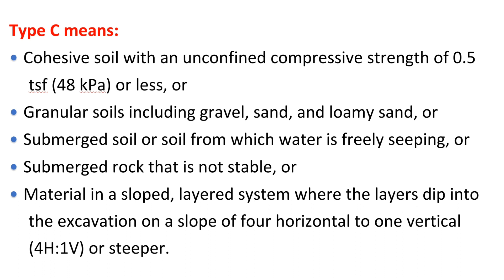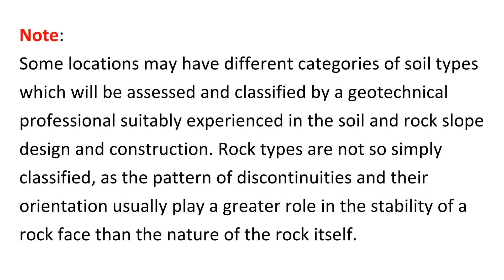Type C means cohesive soil with an unconfined compressive strength of 0.5 TSF (48 kilopascals) or less; or granular soils including gravel, sand, and loamy sand; or submerged soil or soil from which water is freely seeping; or submerged rock that is not stable; or material in a sloped layered system where the layers dip into the excavation on a slope of 4 horizontal to 1 vertical (4H:1V) or steeper. Note: some locations may have different categories of soil types, which will be assessed and classified by a geotechnical professional suitably experienced in soil and rock slope design and construction.